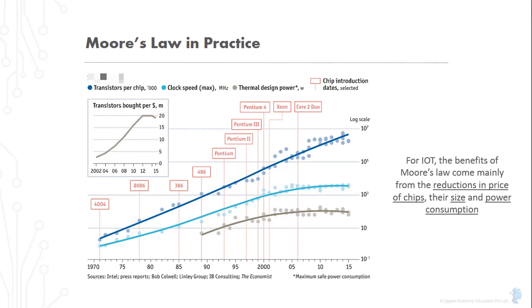For IoT, the benefits of Moore's law come mainly from reductions in the price of chips, their size, and power consumption.